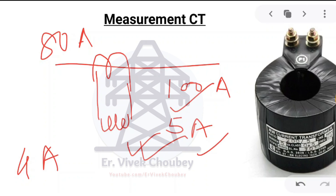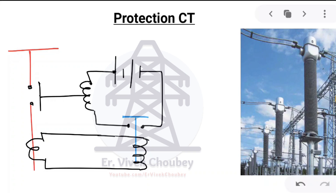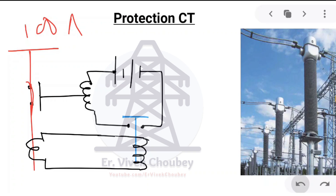Now let us come to the protection current transformer, which has an entirely different role to play. It is used to actuate a relay, which will then trip the circuit breaker. Let's say a line is carrying 100 amperes of current and suddenly some fault happens — a line-to-ground fault, line-to-line fault, or other types. The basic feature of a fault is that the line current increases 10 to 20 times, which is very normal during a fault. At that time, it is important that this line is disconnected so that the fault can be countered.